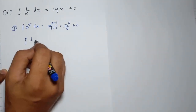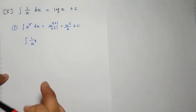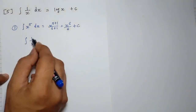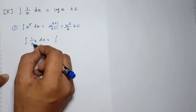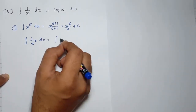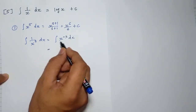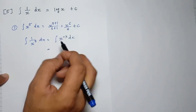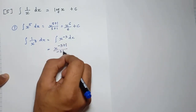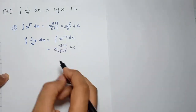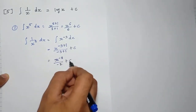One more example: if 1 divided by x raised to 3 is given. We use the first rule — first of all, since x^3 is in division, we convert it to x raised to minus 3. Now we complete this integration: minus 3 plus 1 divided by minus 3 plus 1 plus c, so the answer will be x raised to minus 2 divided by minus 2.